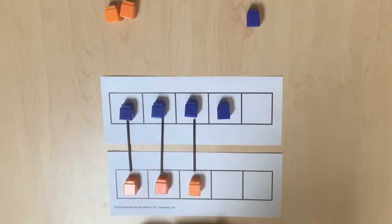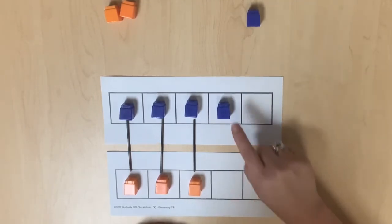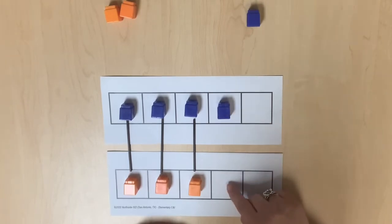Finally, we can use comparative language once again. The set of blue cubes has more because it had an extra cube without a match. There are fewer orange cubes than there are blue cubes.